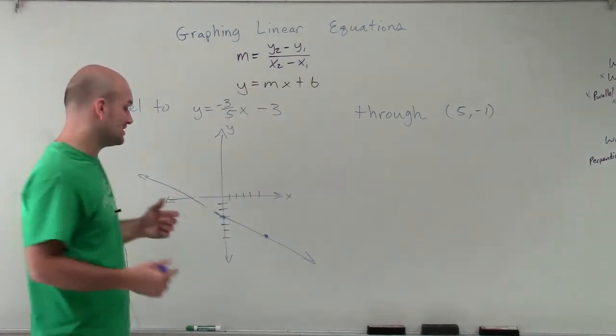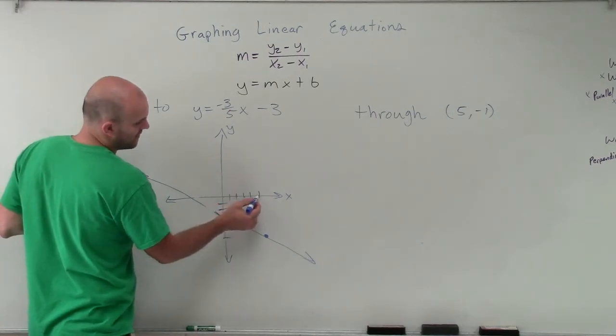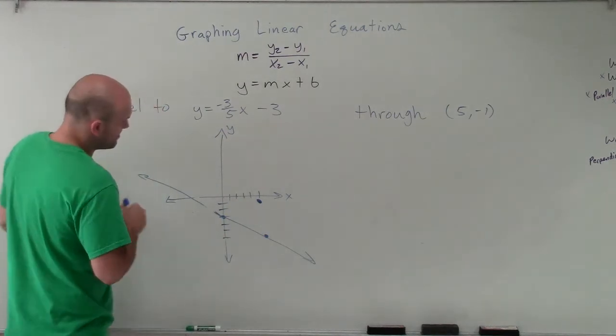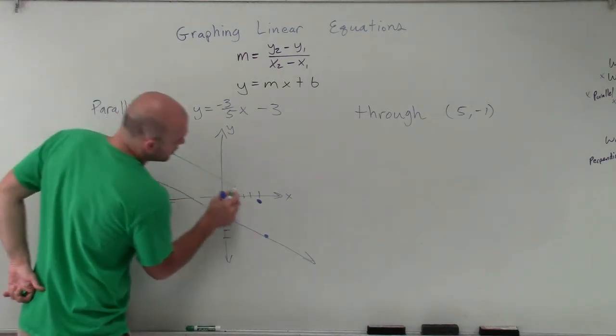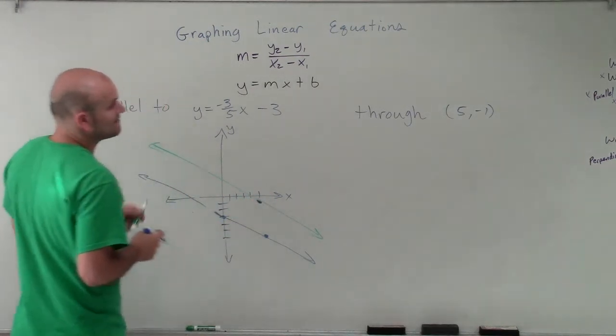I need to find a new equation that's going to go through the point (5, -1). So over 1, 2, 3, 4, 5, down negative 1. So I need to find a new line that's going to be parallel to the one I've drawn that goes through this point, 5, negative 1.